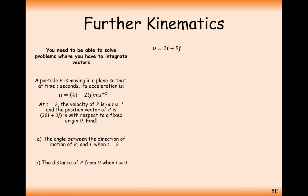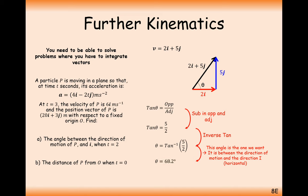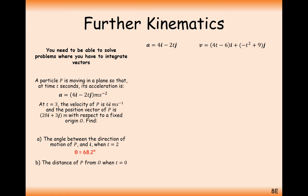Drawing a diagram: 2 to the right and 5 up, we want the angle between this direction vector and the horizontal. Using tan, inverse tan of (5/2) in degrees mode gives theta equals 68.2 degrees. So the answer to part A is 68.2 degrees.